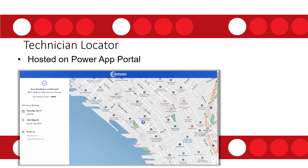Then there's the technician locator, which lives inside a Power Apps portal. You'll be able to send reminders to customers — these could be emails or SMS messages, though SMS requires a provider. On the day of scheduled service, notifications can be sent to the customer, and you'll be able to track the resource's progress to the destination in semi-real time.